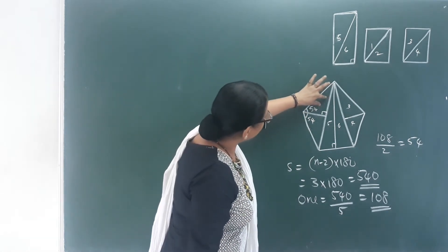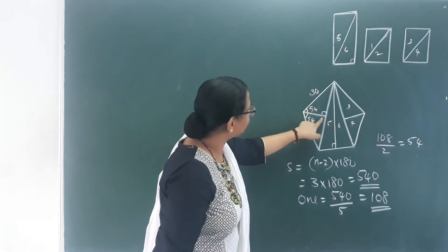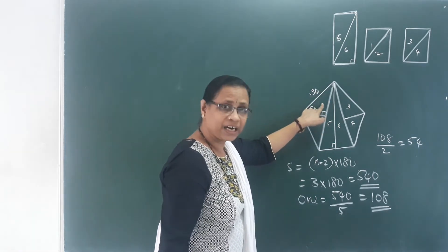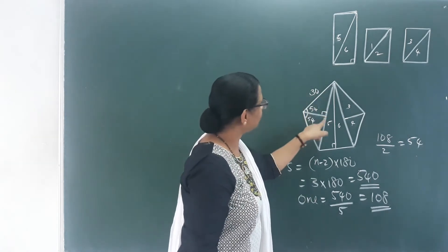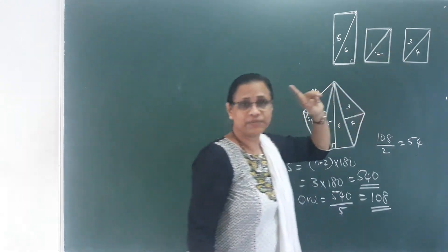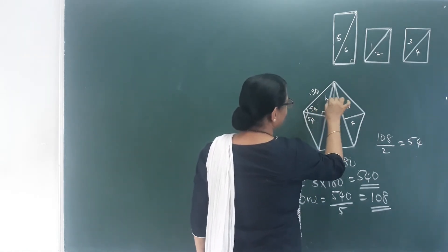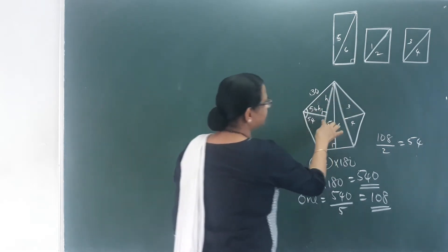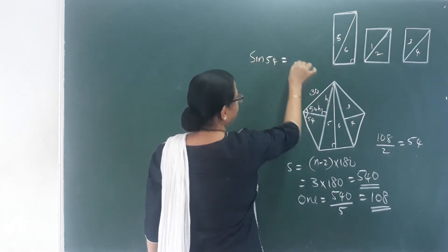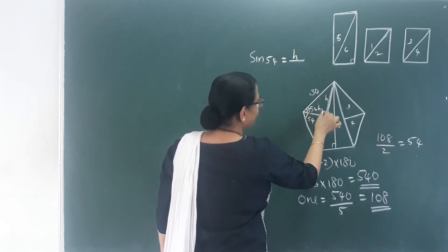This is a right-angle triangle. The length and breadth correspond to the height of the triangle. These are two perpendicular pieces from the right-angle triangles. To find height h, we use sin 54: sin 54 equals opposite side over hypotenuse, which is h divided by 30.